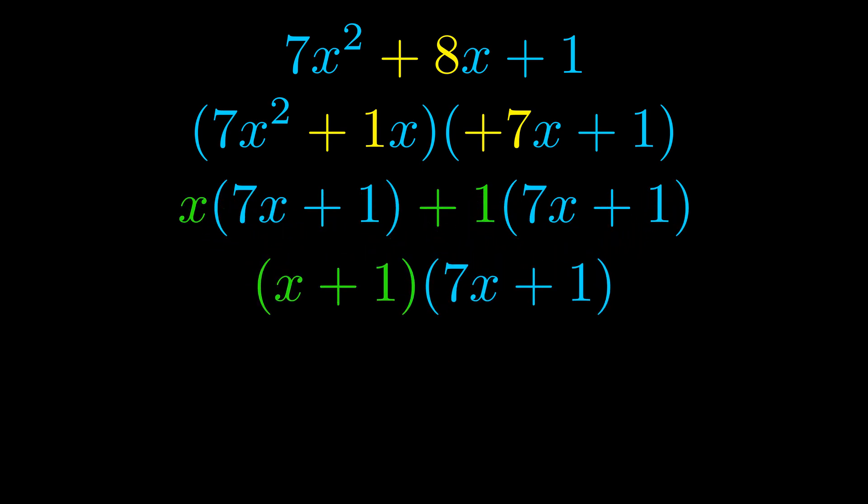The blue values are the same. Those blue values will become one of our factors and we will combine the two green values, the GCFs that we pulled out, to get the other one. And that is our fully factored equation.